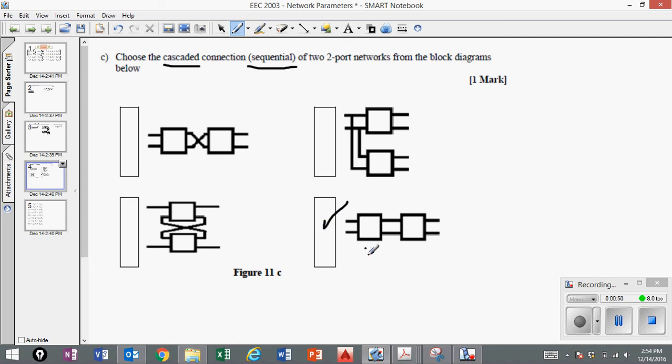Well, this is the correct answer because they're basically connected in series where the output of one cascades into the output of the second. Which means these two network parameters would literally be multiplied by each other in order to get the total output.